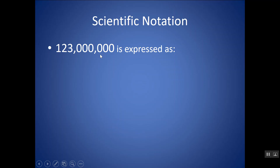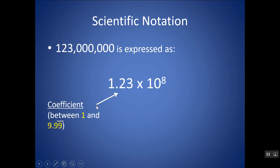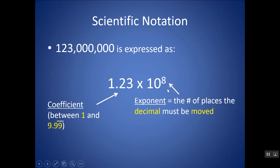So this number, 123 million, can be written in scientific notation. The number in front we call a coefficient, and it should be a number between 1 and 9.999 — so a number less than 10. This number here is an exponent, and it basically tells you the number of places that the decimal had to be moved in the original number to create this coefficient that's between 1 and less than 10.